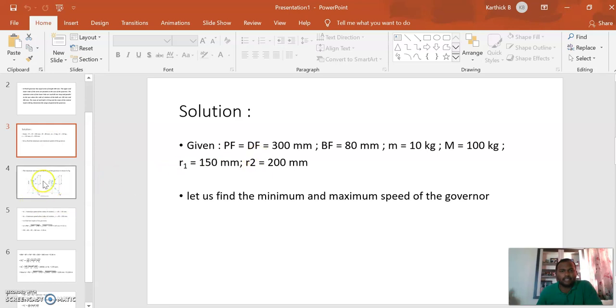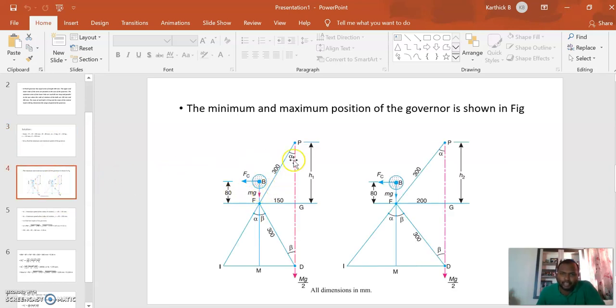The given data from the problem: PF is 38 mm, FG is 550 mm, and FB is 80 mm.